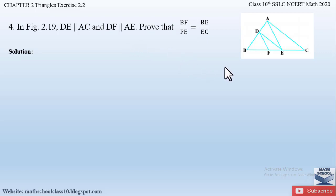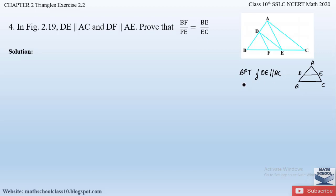Let us recall the Basic Proportionality Theorem. If you have a triangle ABC, and there is a line DE which is parallel to BC — one of the sides of the triangle — and it intersects the other two sides AB and AC at D and E, then the Basic Proportionality Theorem says that this line divides the other two sides in equal proportions.